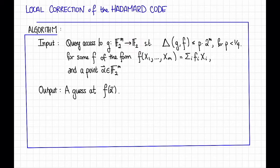In the language of the Hadamard code, that means the following. Query access to some corrupted codeword means query access to some function g, which takes inputs in F₂^m and spits out a bit in F₂ so that g is close to some f in our code. That is, so that the Hamming distance between g and f, here I'm abusing notation a little bit, by Hamming distance between two functions, I mean the number of points on which those two functions differ.